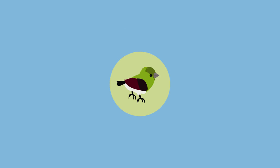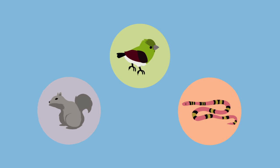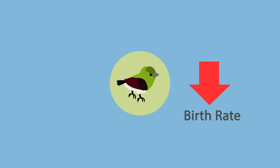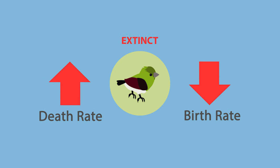If an entire species fails to adapt to changes in its environment or compete with other organisms for resources, and its birth rate is lower than its death rate, then it will become extinct.